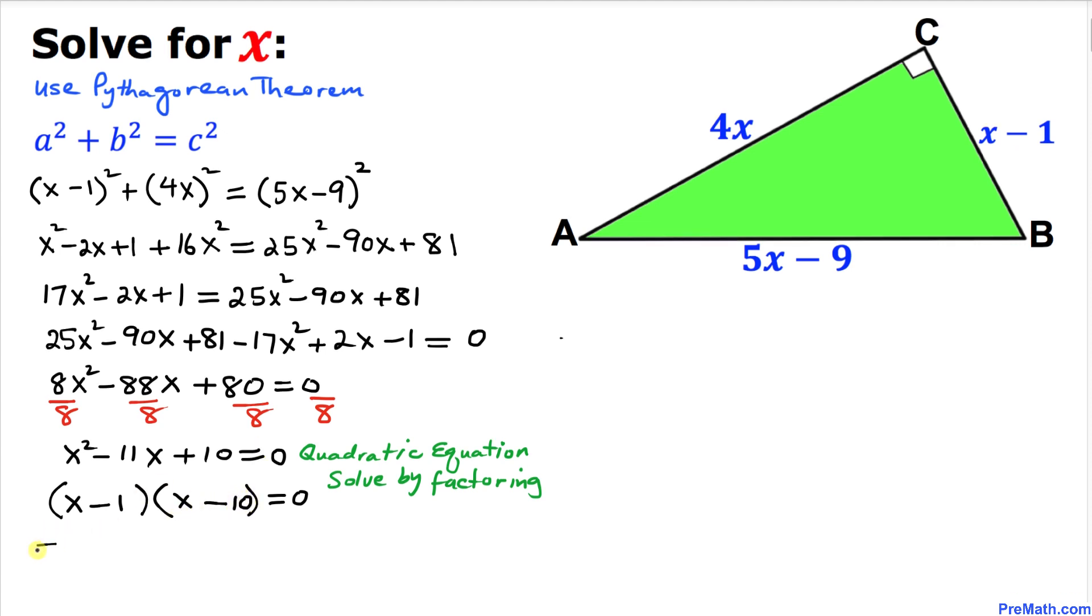Now we can easily separate these two factors. X minus 1 equals 0, and the other one is x minus 10 equals 0. That means our x values turn out to be 1 and 10.